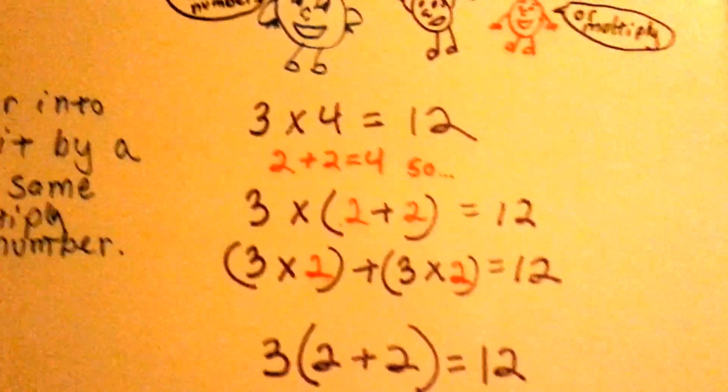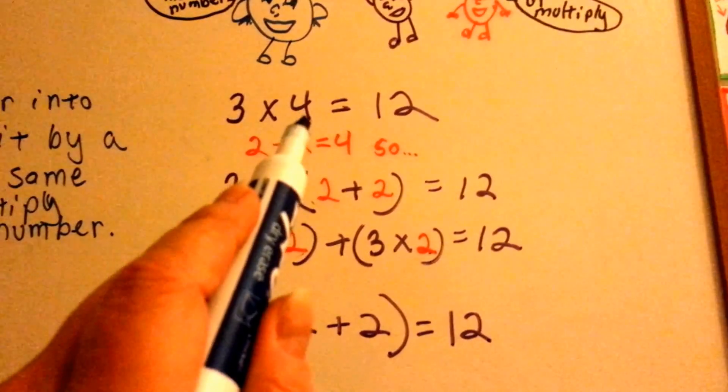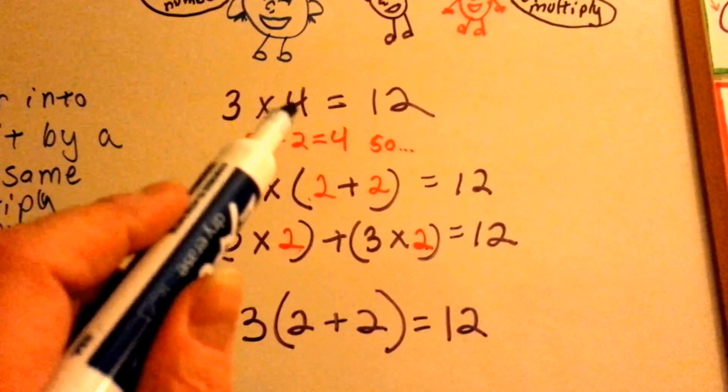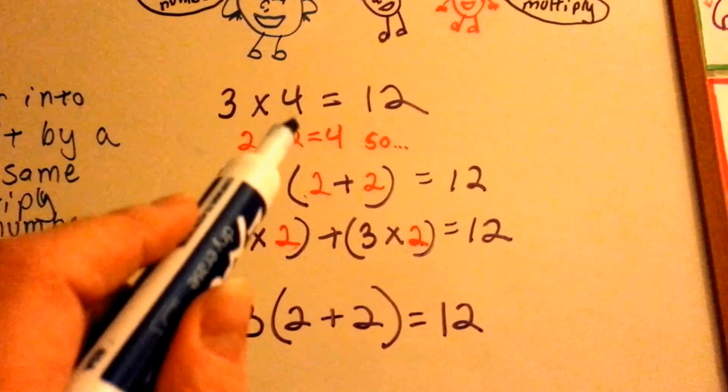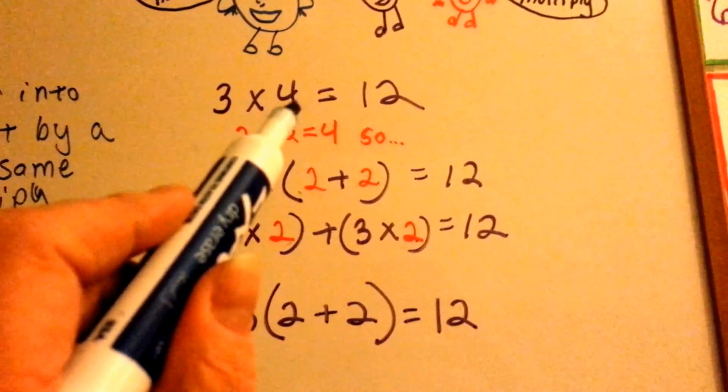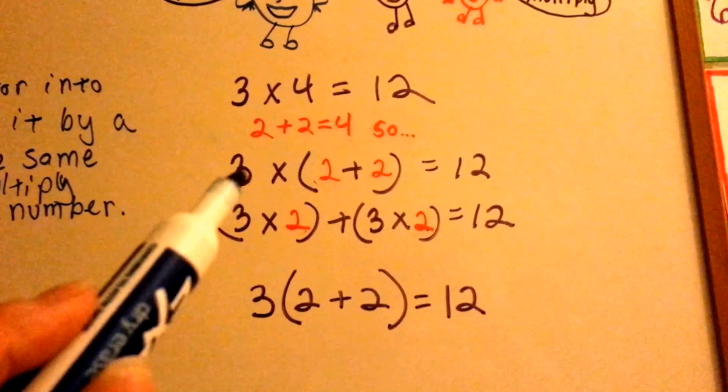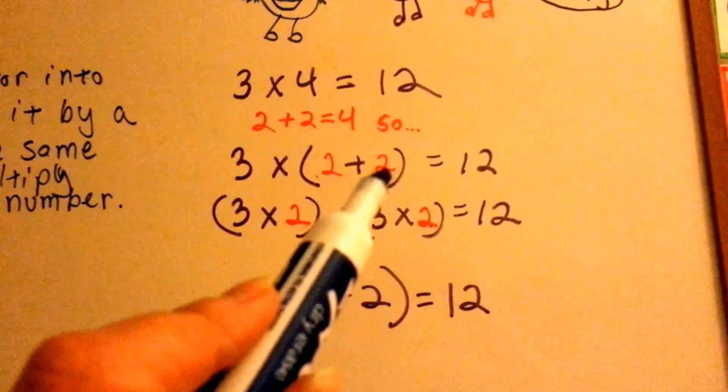Let's say you have 3 times 4. You take the 4, or the 3, either one, but you take one of them, and you split it into an addition problem, like 2 plus 2.